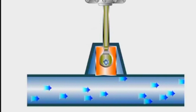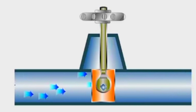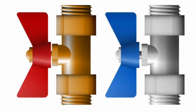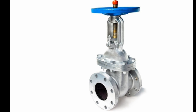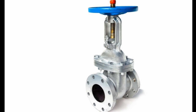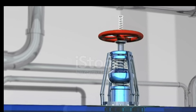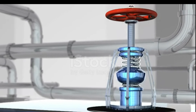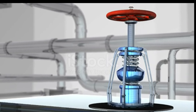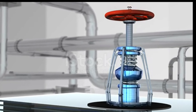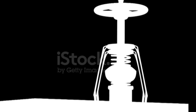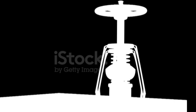A gate valve, also known as a sluice valve, is a valve that opens by lifting a barrier out of the path of the fluid. Gate valves require very little space along the pipe axis and hardly restrict the flow of fluid when the gate is fully opened. The gate faces can be parallel but are most commonly wedge-shaped.